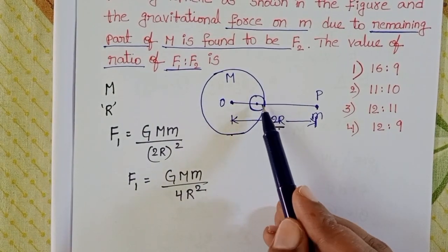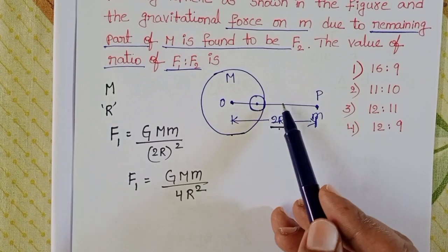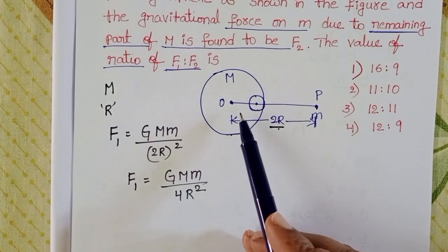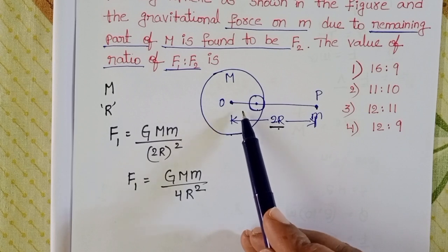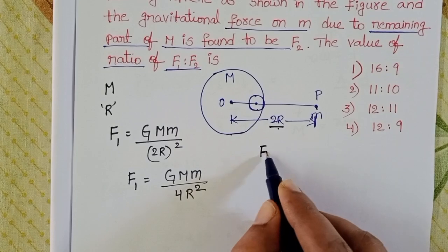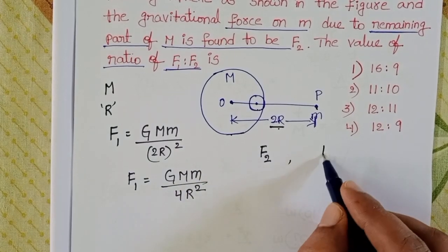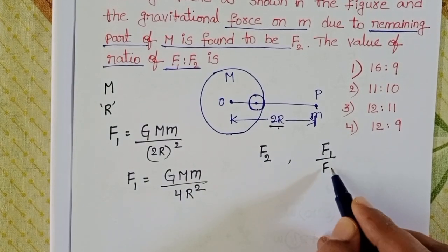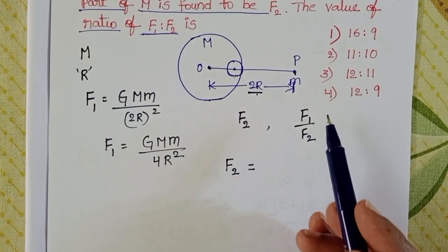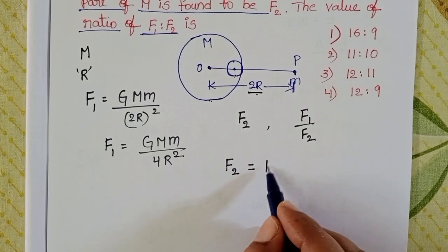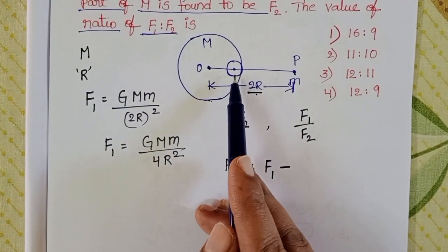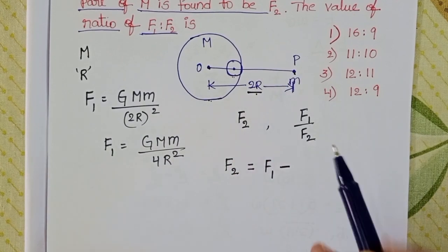After that, a spherical part is removed from the solid sphere. The radius of this spherical part is R/3. The gravitational force of attraction between the remaining mass and the point mass is F2. This equals the force on the large sphere minus the force on the small removed sphere.